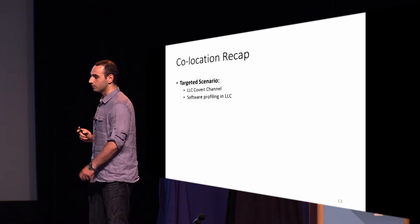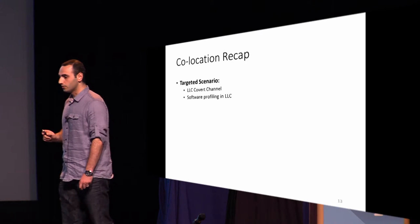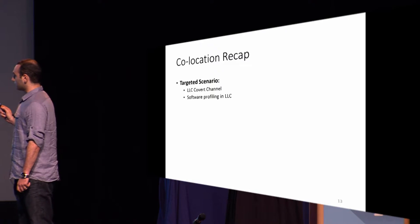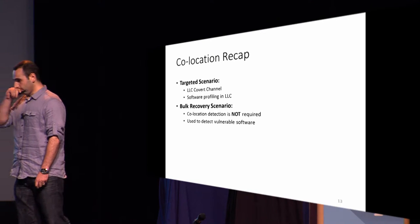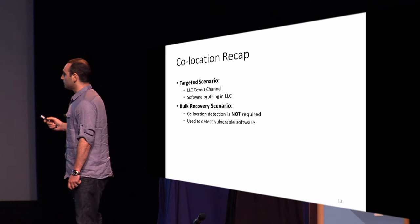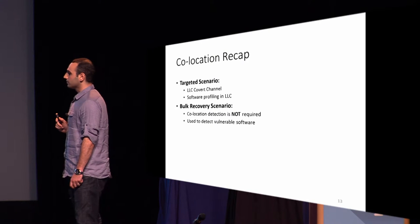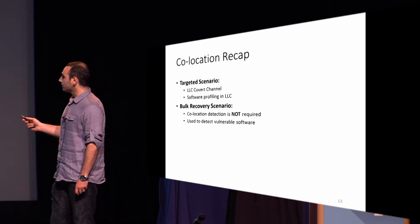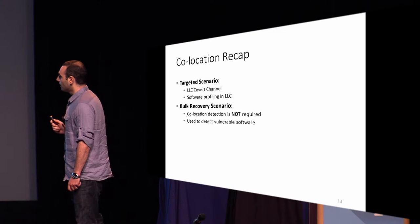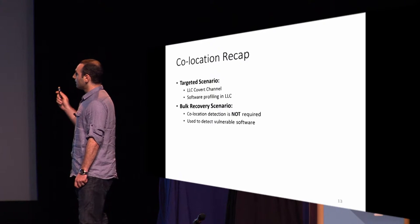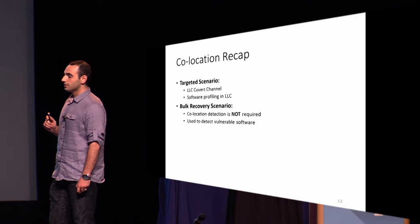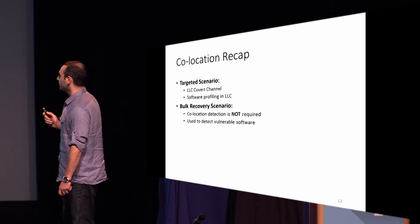To recap co-location detection: for the targeted scenario, we can use the last-level cache covert channel or software profiling. In the bulk key recovery scenario, we do not need co-location detection — the attacker simply spins up multiple instances and collects traces from all of them. However, we can still use software profiling to detect vulnerable software when targeting a specific version of a specific library.